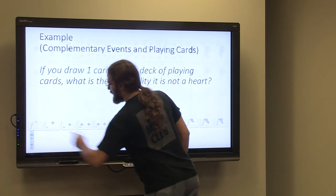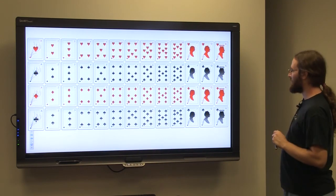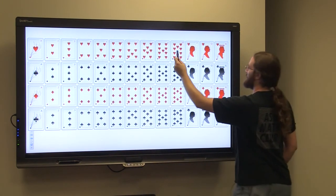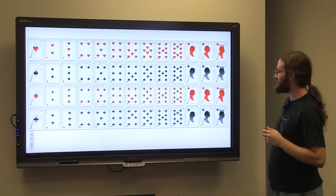And actually here I can show you what the standard deck of cards looks like. So we have our aces, twos through tens, our jack, queen, and king. And we have our four suits.